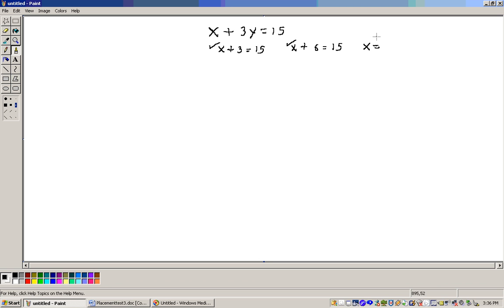If we let y be 3, we'd have 3 times 3 is 9, so we'd have x plus 3 times 3 is 9 equals 15. This also has a positive solution. And if we let y be 4, we'd have x plus 4 times 3 is 12 equals 15, and this has a positive solution. So these 4 have positive solutions.